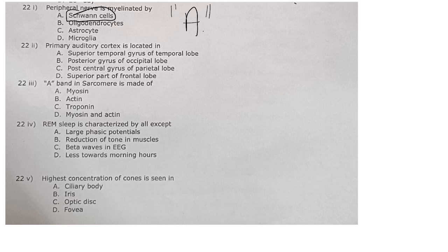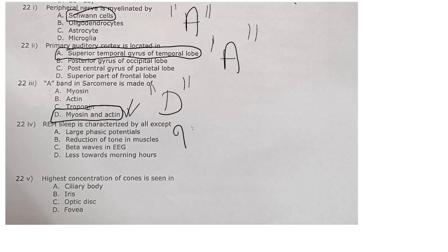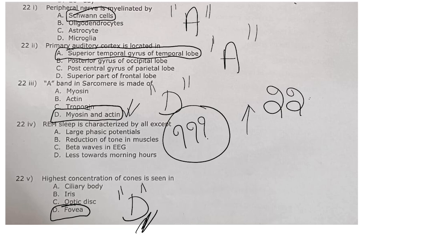In 28-day menstrual cycle, regression of corpus luteum occurs on 10 days after ovulation, that means C is the answer, 24th day. Peripheral nerves myelinated by Schwann cells - A is the best answer. Primary auditory cortex located in superior temporal gyrus of temporal lobe, A is the answer. A band in sarcomere because of the myosin and also the actin, D is the answer. REM sleep characterized by all except - this is homework for you. Find out the answer for question number 22-4. Last question, highest concentration of cones is seen in fovea. D is the answer. All of you write the answer of 22-4 in your chat box.